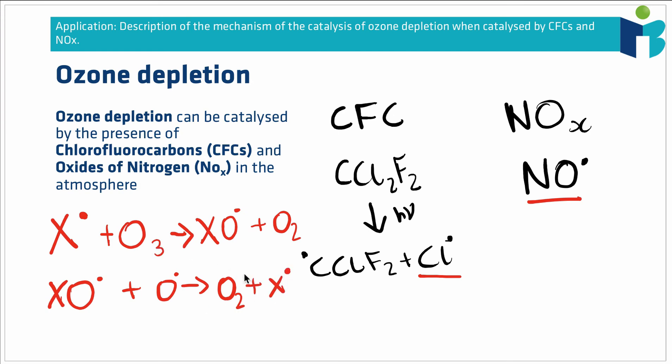The problem with this is that our radical is regenerated. That means this radical can go back to the beginning of the first reaction and do the same thing again. These two reactions can happen over and over again in a cycle where we use our radical to destroy ozone, then that radical is regenerated, destroys more ozone, regenerated, destroys more ozone, regenerated.